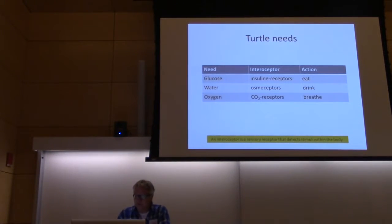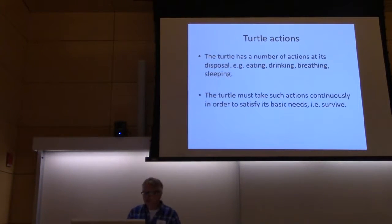The turtles have different needs, for example they need glucose, water and oxygen. How do they know the status of those needs? They have receptors inside their body, interoceptors, that will tell them the levels of those substances. When the levels get too low they will be prompted to take different actions to get the levels up again, for example by eating, drinking and breathing. The turtle has a number of actions at its disposal and to stay alive it has to take those actions continuously, otherwise it will die.